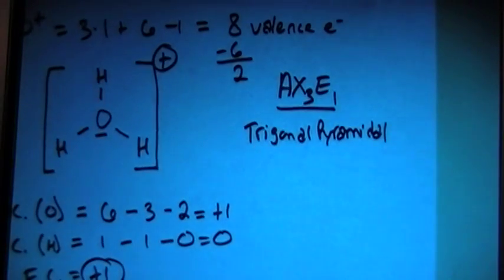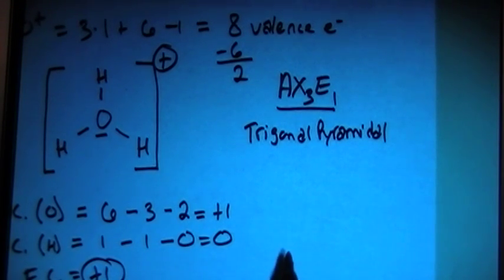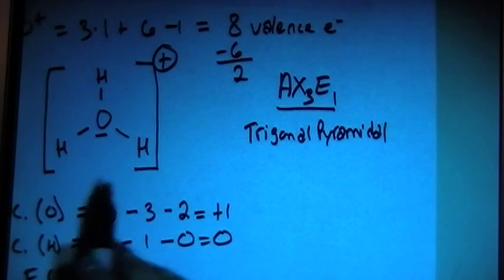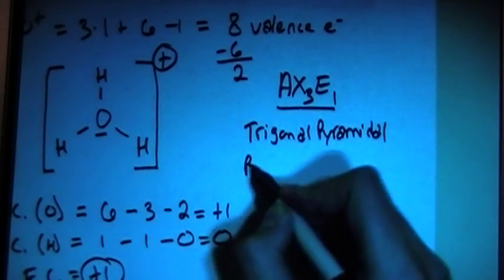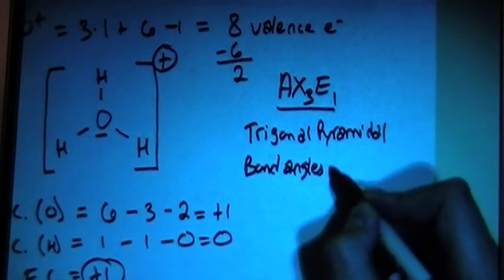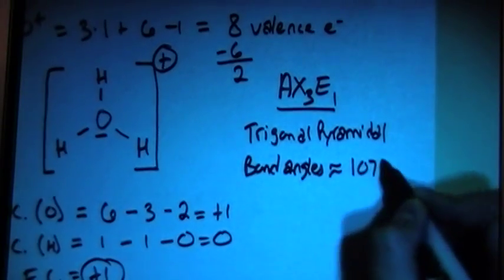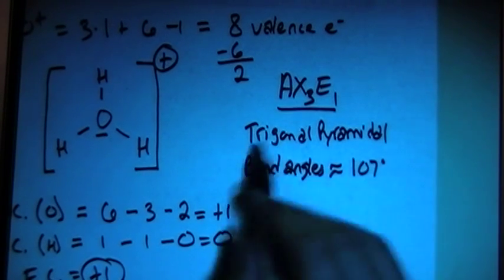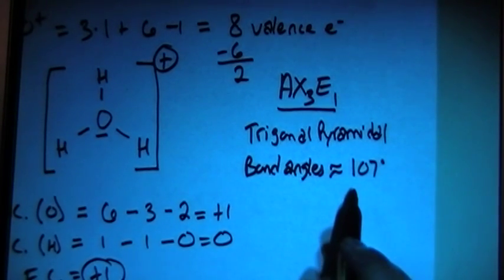So, all right, so that's going to be the three-dimensional shape of this ion. And we can then, with this shape, the bond angles are approximately equal to 107 degrees. It's just something that you need to know for this shape. This is the approximate bond angle.